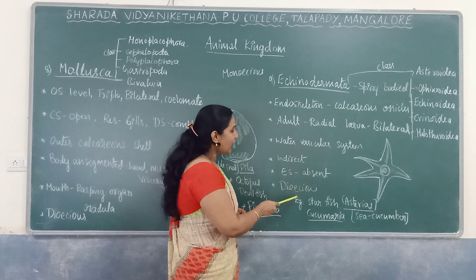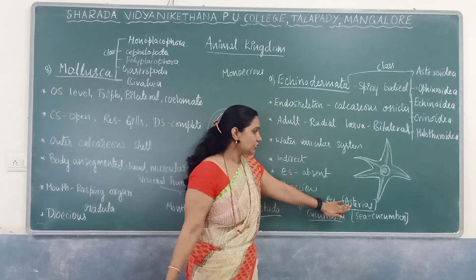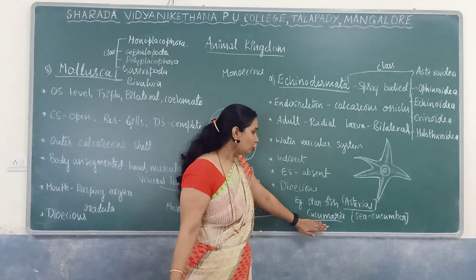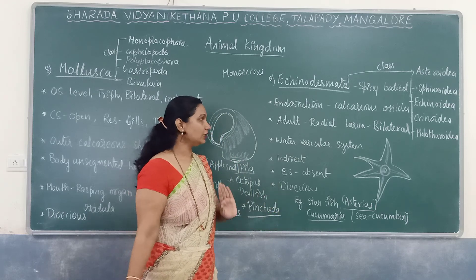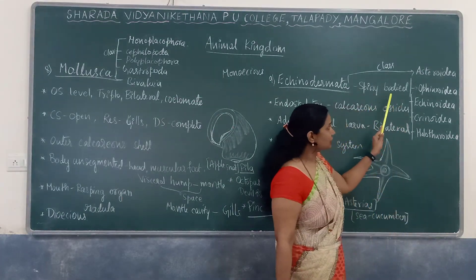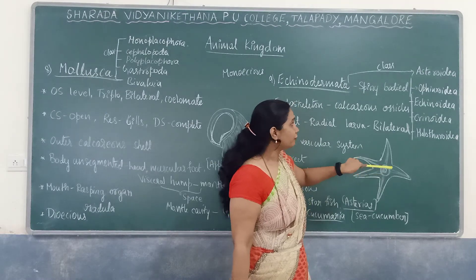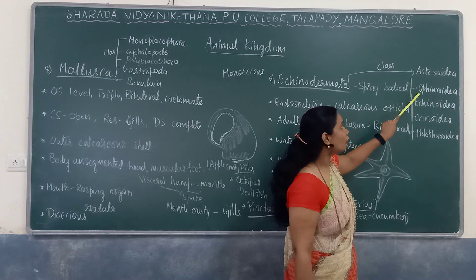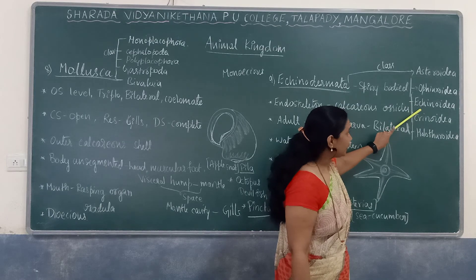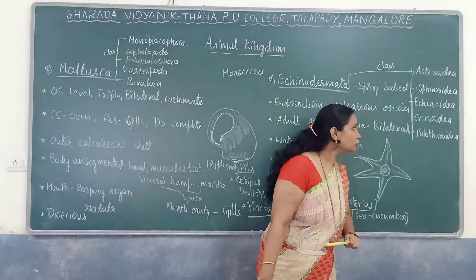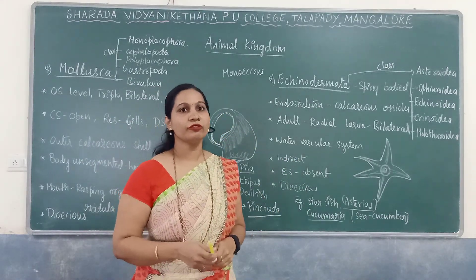Echinodermata members have indirect development and are dioecious — sexes are separate. Examples include starfish (scientific name Asterias) and Cucumaria, commonly known as sea cucumber. The five classes include class Asteroidea (starfish) and class Ophiuroidea (brittle star).